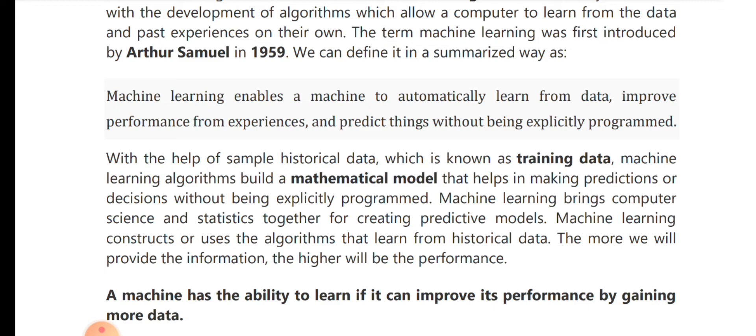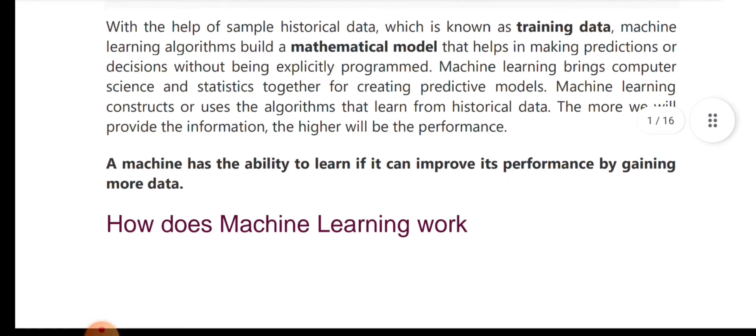Machine Learning uses algorithms that learned from historical data. The more information we provide, the higher will be the performance — that is a very important key point. A machine has the ability to learn if it can improve its performance by gaining more data.